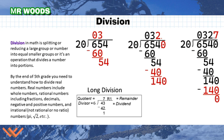Division in math is splitting or reducing a large group or number into equal smaller groups — an operation that divides a number into portions. We're looking at 654 divided by 20. I can't divide 6 by 20, so I put a placeholder 0. Then 65 divided by 20 — 3 can go in. I have 54 remaining; 2 times 20 is 40, leaving 14. 20 goes into 140 seven times. I move the decimal point up, so the answer is 32.7, or 32 with a remainder of 14.